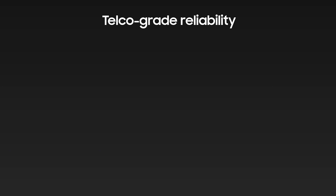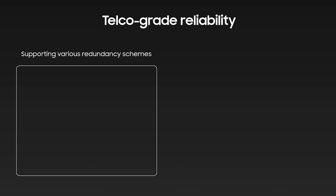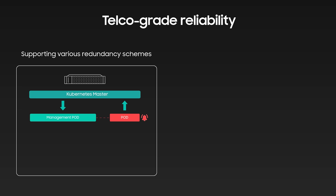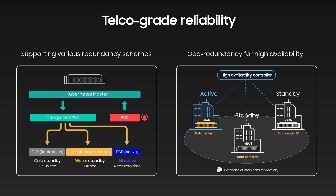V-RAN's microservice-based architecture provides higher network reliability. As V-RAN is deployed as a cloud-native architecture, when a problem occurs with a specific pod, the Kubernetes master recognizes it and sends an alarm to the management pod. Then, according to various redundancy schemes, network operation can continue without service downtime — for example, the master may order a new pod to be created, activate a standby pod, or order another active pod to take over. The figure on the right shows a geographically separated redundant network: when there is a problem in one V-RAN data center, V-RAN on standby in another data center becomes active. Geo-redundancy is easily secured through a software-based V-RAN.